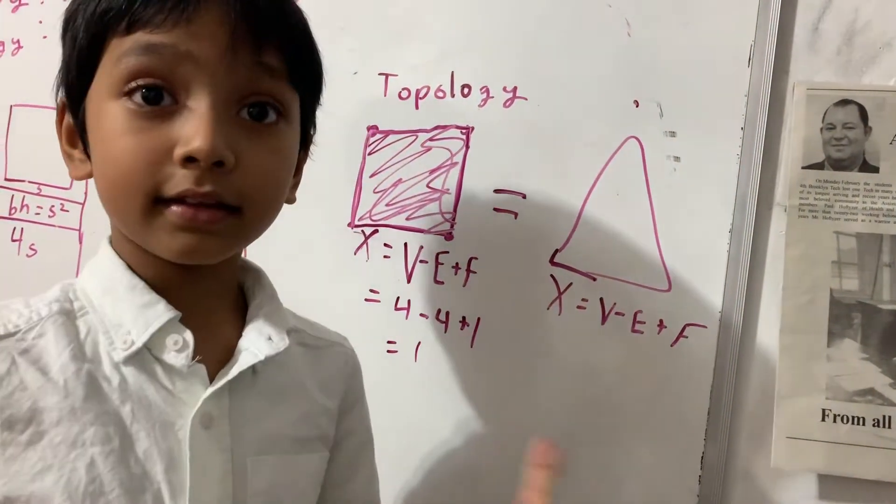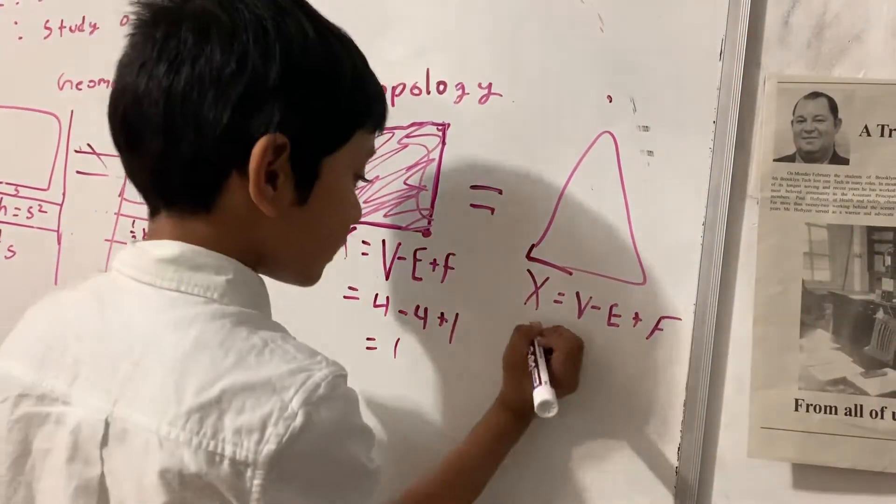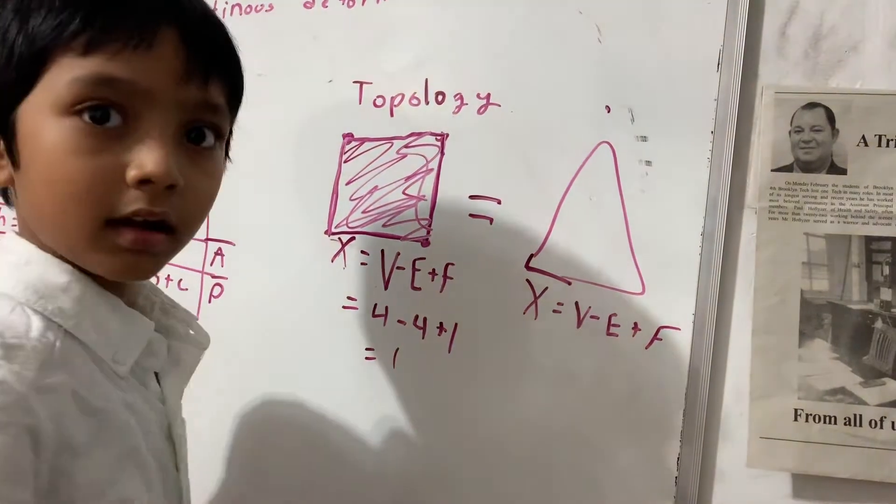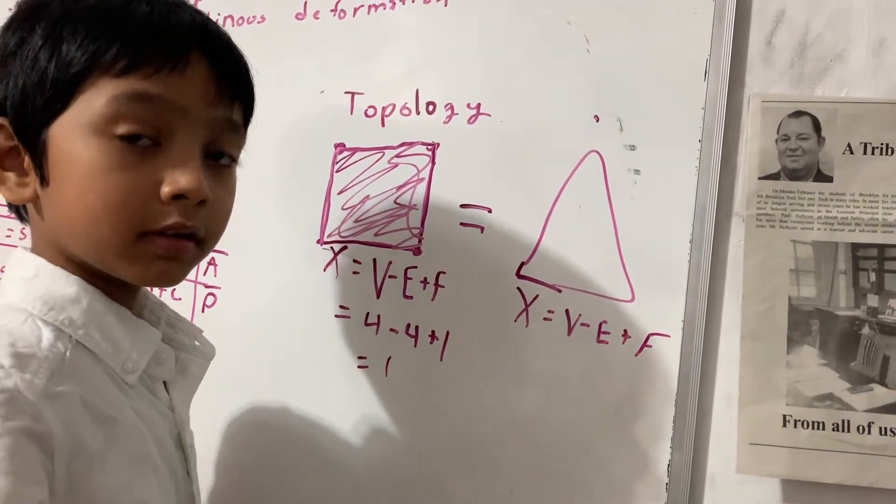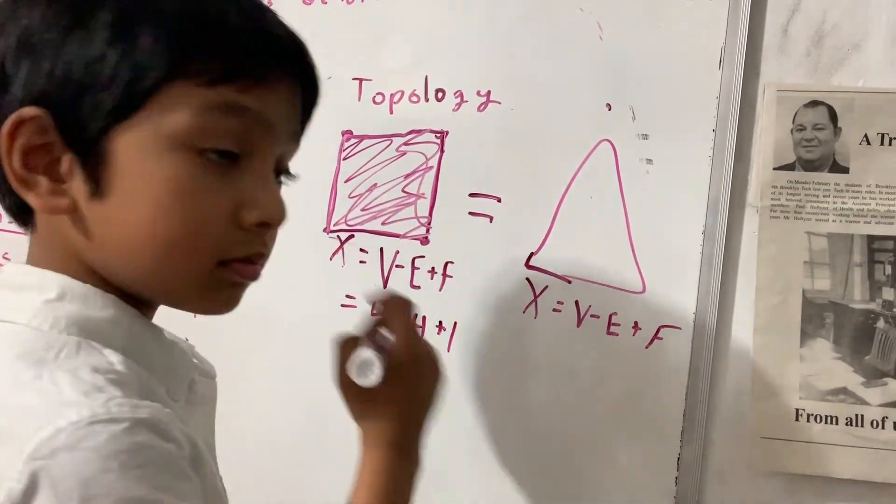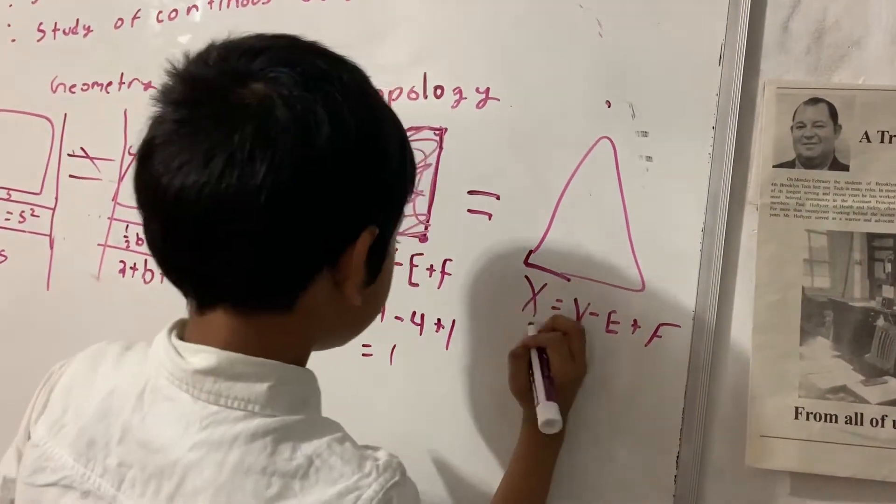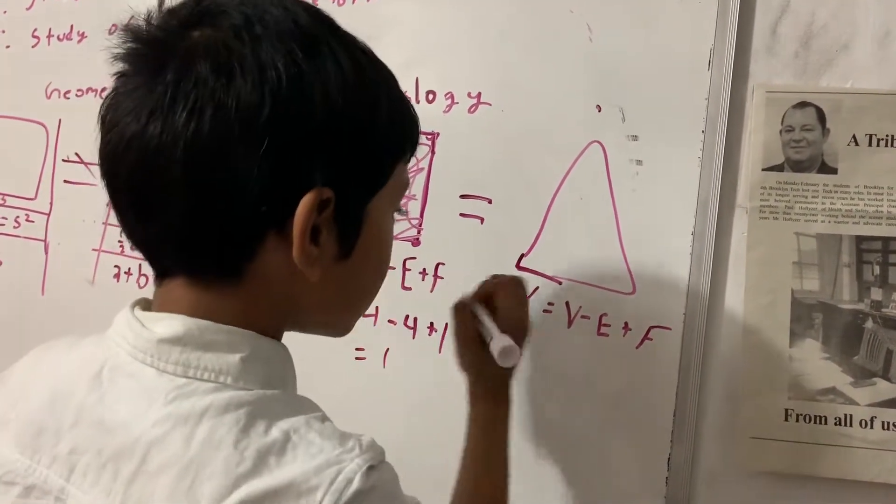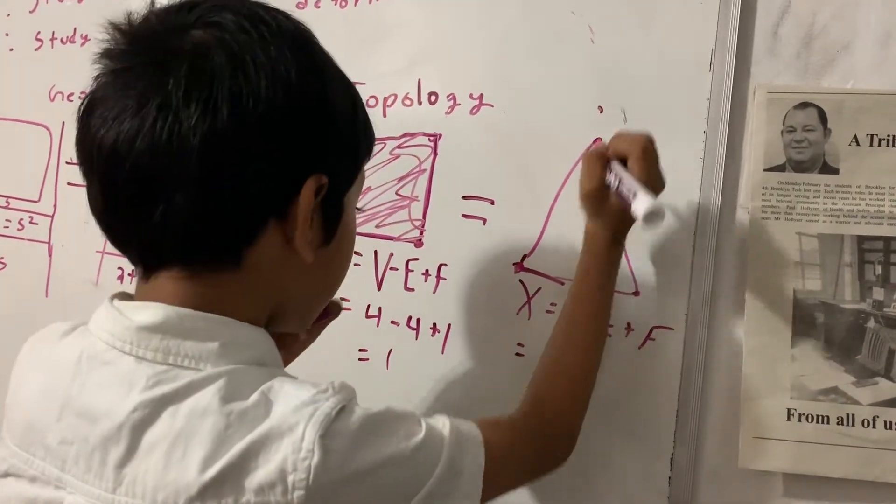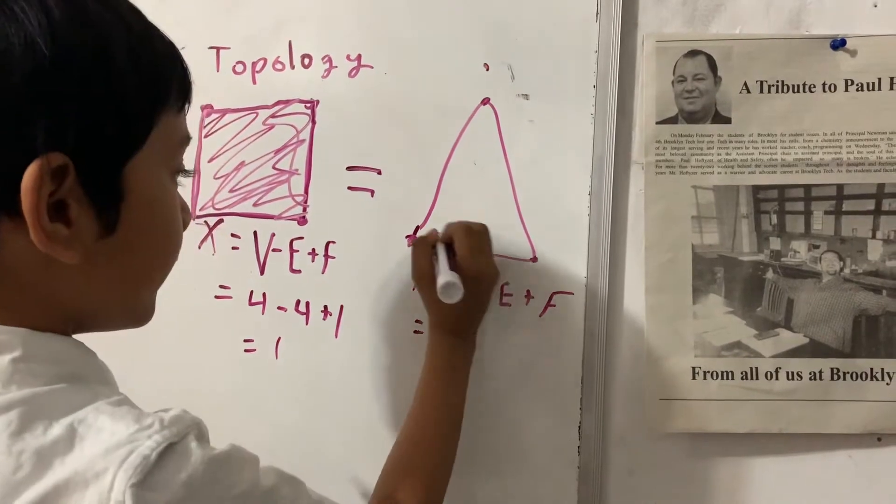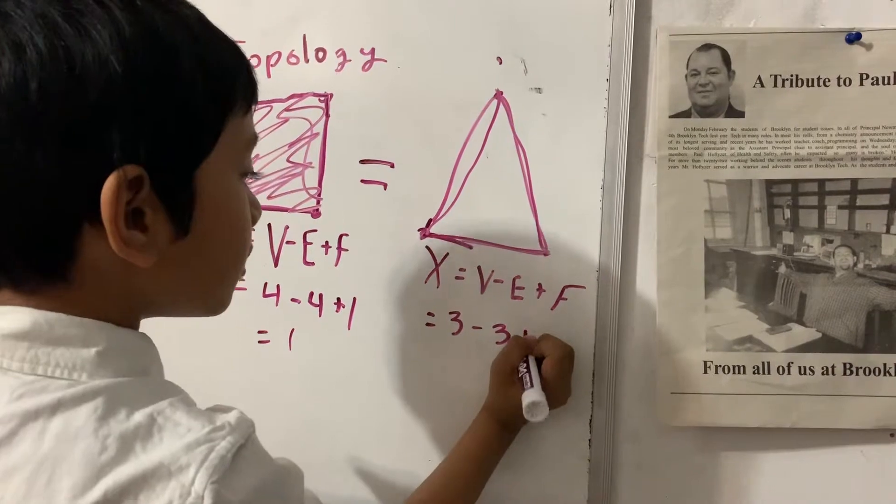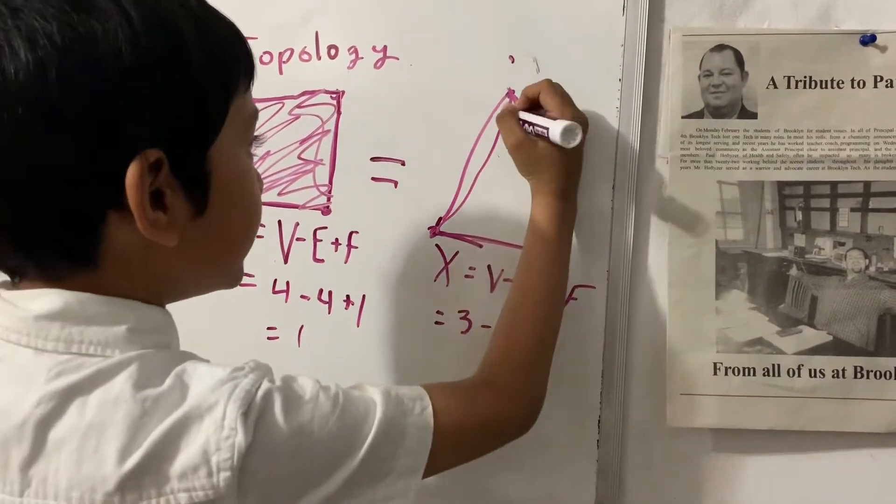And there's a surprise: chi of a square equals the chi of a triangle. Let's see why. So, three vertices, one, two, three, minus three sides or edges, plus there is one face.